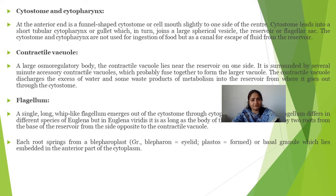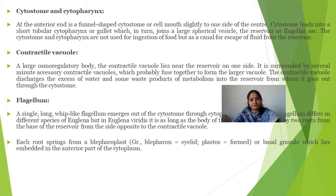The cytostome and cytopharynx serve just as a reservoir outlet. A large contractile vacuole lies near the reservoir on one side. It is surrounded by several minute accessory contractile vacuoles, which probably fuse together to form the large vesicle. The contractile vacuole discharges excess water and some waste products of metabolism into the reservoir, from where it exits through the cytostome.